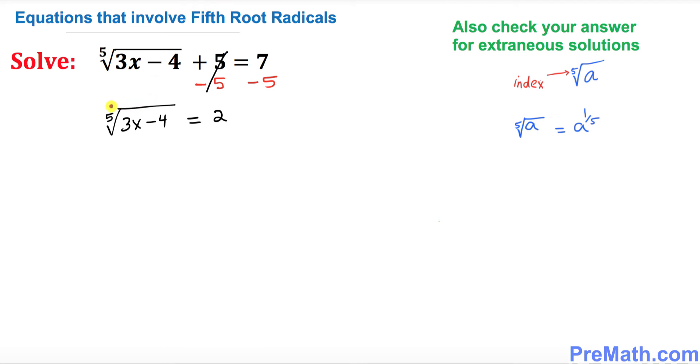Now we want to take the power five because we want to get rid of this fifth root, and we will take power five on the right hand side as well. Now you see this power five and fifth root, they undo each other. We end up with 3x minus 4 equal to two to the power five. That means you're going to multiply two five times, which gives you 32. Just keep in mind on the right hand side that if you have a fifth root and you take it to the power five, you will get simply that a.